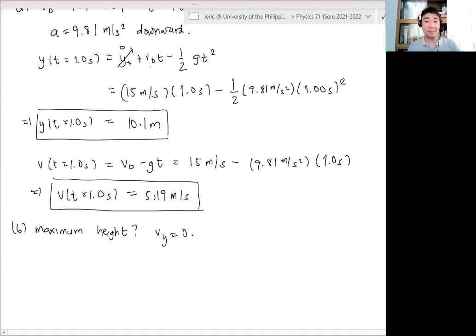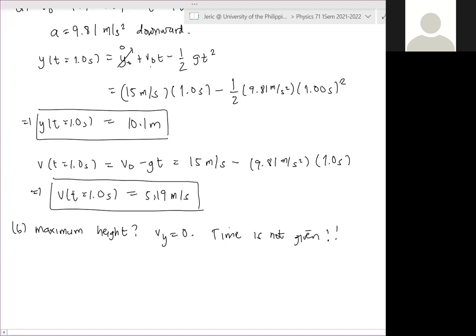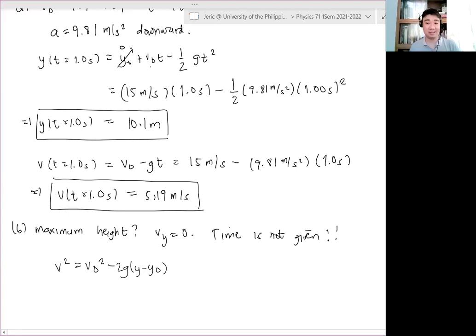Huwag kakalimutan na at the maximum height the final velocity vanishes. Therefore since wala ka namang time na beven, time is not given, of course what you can do is to determine time pero additional burden sa inyo yun, time is not given, what can you do? Anong gagamitin mo? Position and velocity equation. We will use our velocity position so we have Vy squared equals, sorry V squared na lang yan, V squared equals V naught squared minus 2G quantity Y minus Y naught.